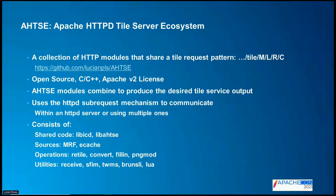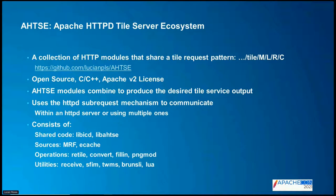Atze consists of several pieces. It starts with shared code — previously libAtze and libICD (Image Codecs). Then it has source modules: MRF, which is a powerful format for tiles in GDAL; and eCache, the ESRI bundle cache format. The core is operational modules — things like retile, convert, fill-in, and PNG mod. Then there are utility modules that are more generic and can be used outside of Atze — things like receive, which issues a sub-request and receives content; send-file-if-match, a regex with fancy MIME type functionality; and tile WMS, a protocol conversion between WMS and the Atze tile pattern.